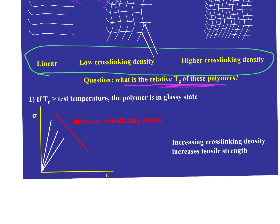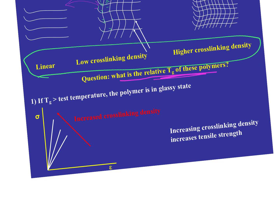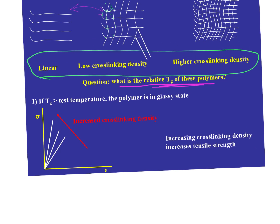DMA — dynamic mechanical analysis — involves a torsional treatment of the plastic, almost like a viscosity measurement as a function of temperature. If Tg is greater than test temperature, the polymer is in the glassy state — sometimes literally glassy (you drop it, it breaks), other times just a higher modulus (you drop it, it bounces). As we increase the crosslink density, that modulus is going to go up. If Tg is less than the testing temperature, the polymer is in the rubbery state, and as we increase crosslink density, we see this progressive increase as a function of stress and strain.